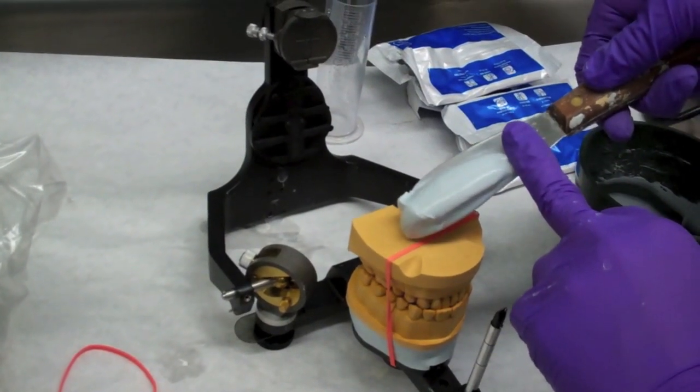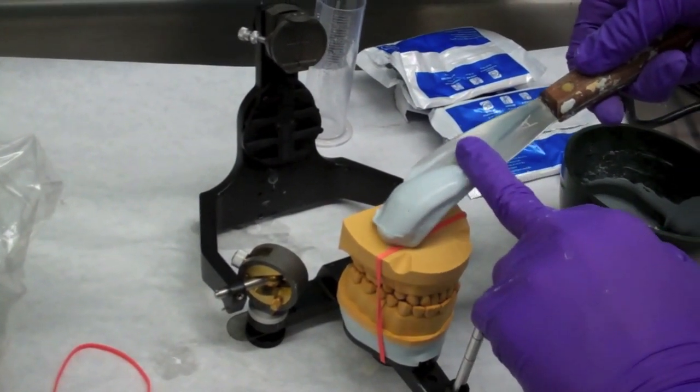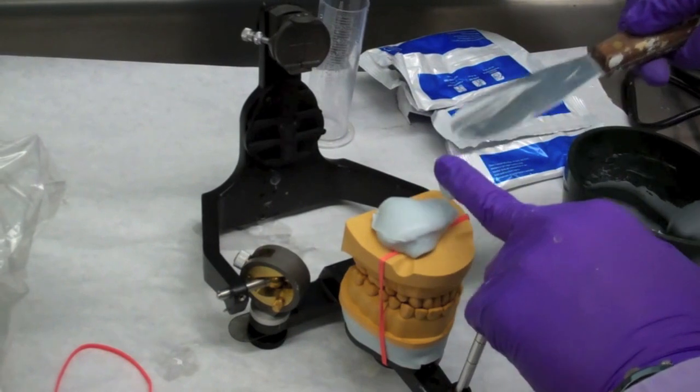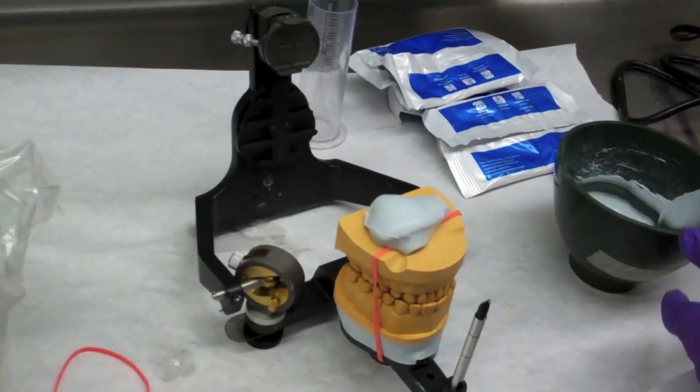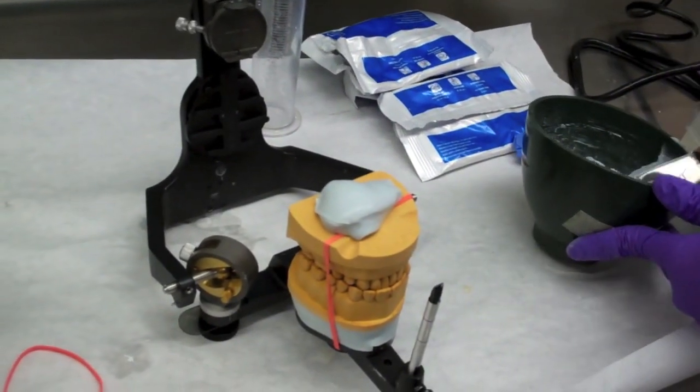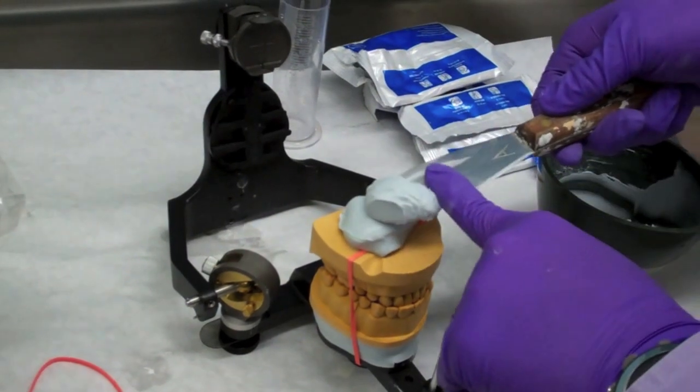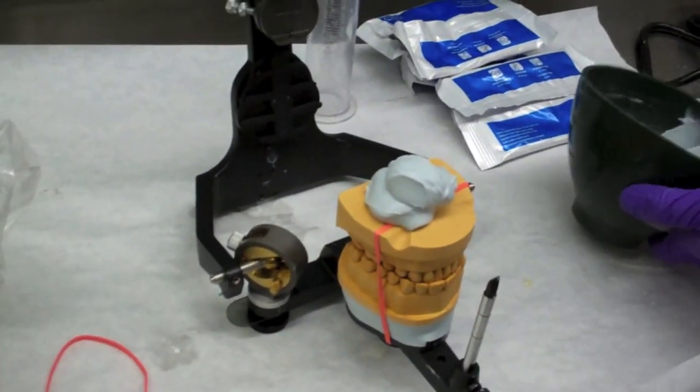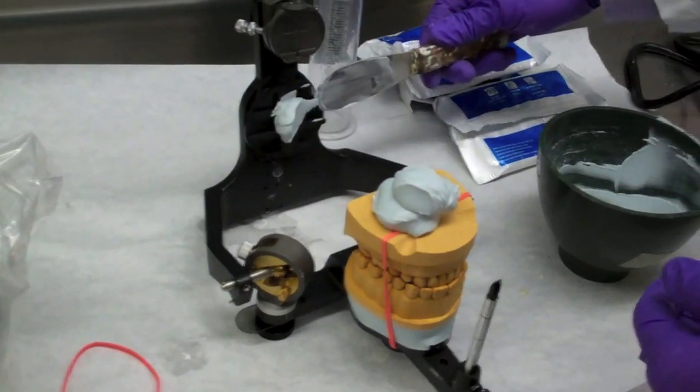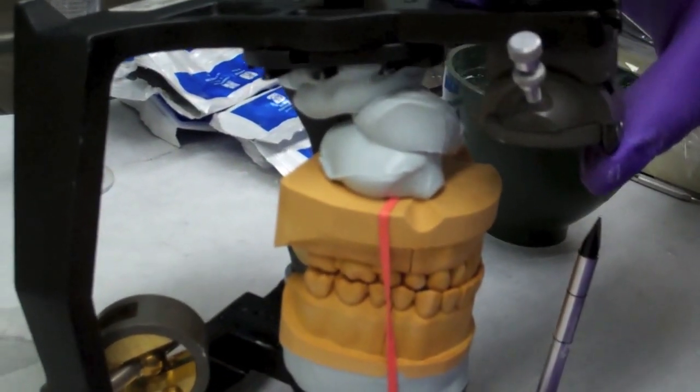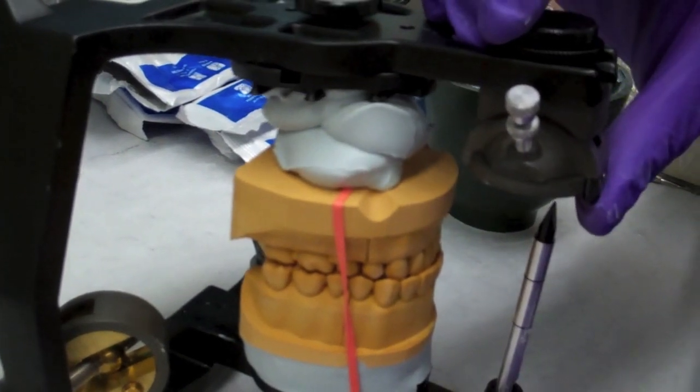With the articulator upside down, we will now repeat the step of mixing another batch of stone. The same steps done to the maxillary will now be done to the mandibular. You will mix another batch of stone, place it in the center of the model, and on the articulating plate. You will then close the articulator as you did with the maxillary cast.